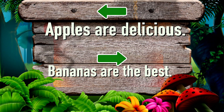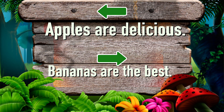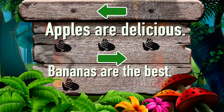Here is the first sign that will tell me which way to go. Oli said I need to find the sentence that has three words. Let's clap and count the words in each sentence. The top sentence is: Apples are delicious. I clapped three times, so that means it has three words. The bottom sentence says: Bananas are the best. I clapped four times, so that means it has four words.